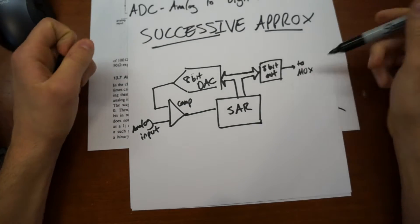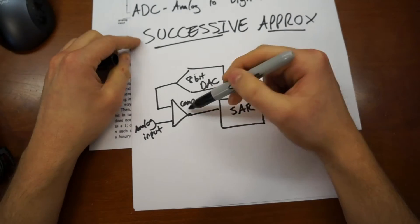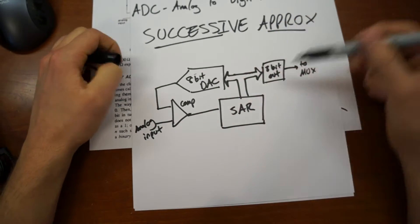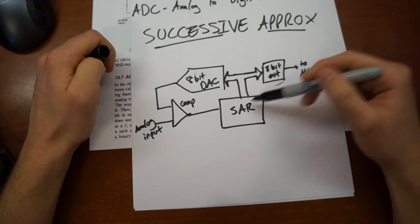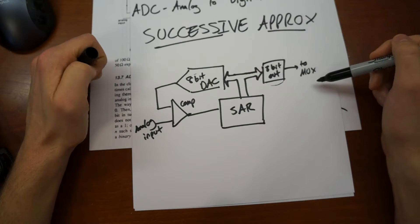And so the way this works is I'm going to copy off of this diagram. Okay, so here's a very rough diagram. Comparator, 8-bit digital analog converter, the SAR chip, and an 8-bit output bus that goes to the microcontroller.